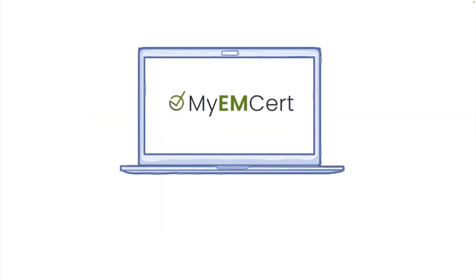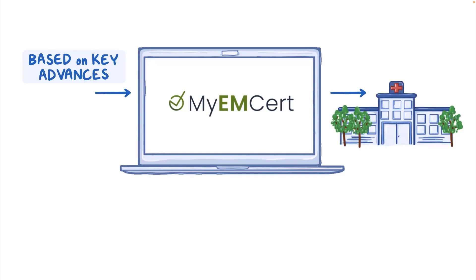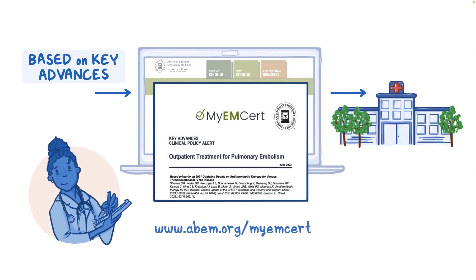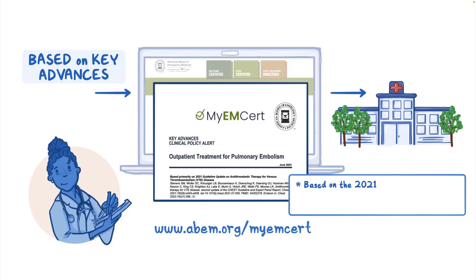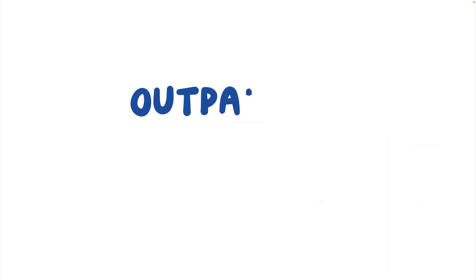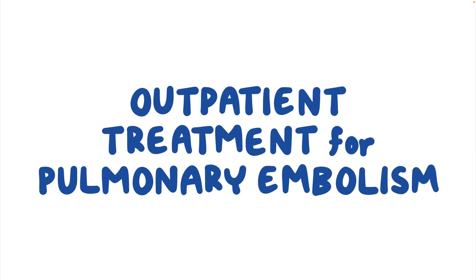Each myEMSERT module includes a section with questions based on key advanced synopses relevant to the practice of emergency medicine. In this video, we will take a closer look at the key advanced synopsis based on the 2021 American College of Chest Physicians Chest Guideline Update on Antithrombotic Therapy for Venous Thromboembolism disease. The synopsis is titled: Outpatient Treatment for Pulmonary Embolism.